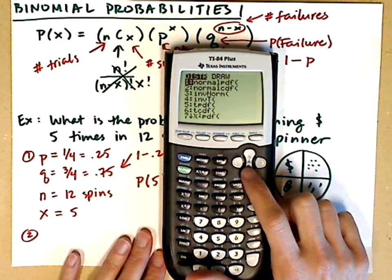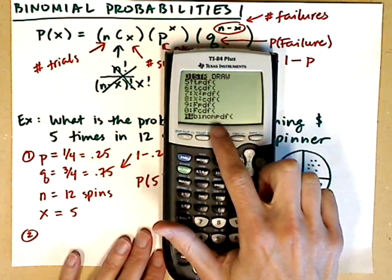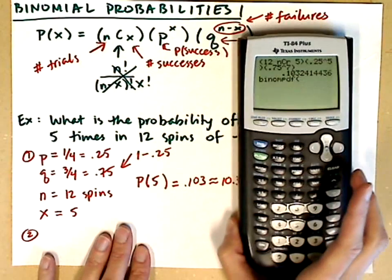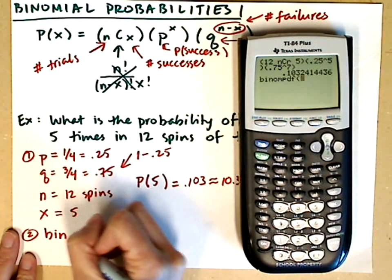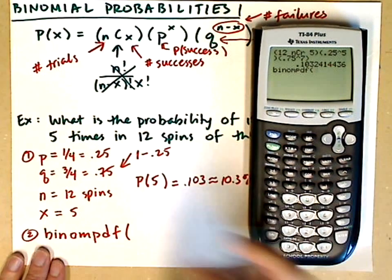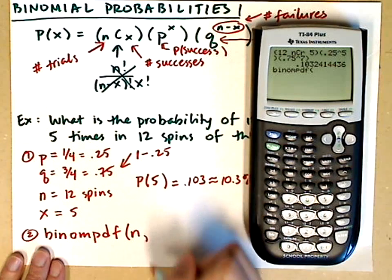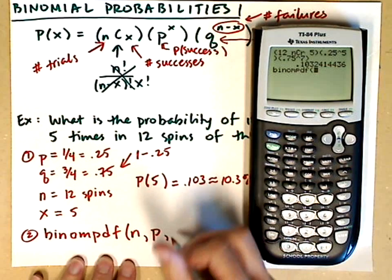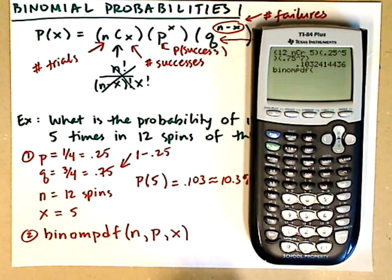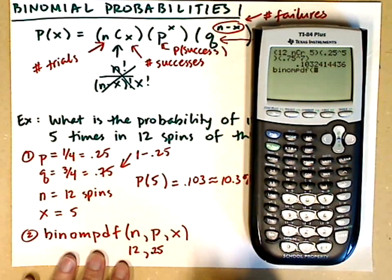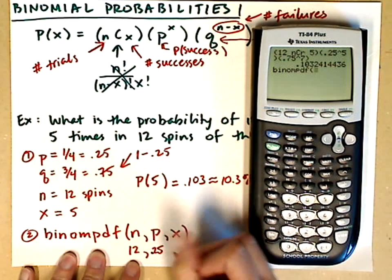I'm looking for the binomial probability distribution function — there it is. Binomial PDF: P is for probability, DF is the distribution function. Hit Enter to choose it. The syntax is: in the parentheses, put the number of trials, comma, the probability of a success (p), comma, the number of successes (x). For ours, that's 12, comma, 0.25, because I have a 0.25 chance of winning money in any one spin, comma, x.